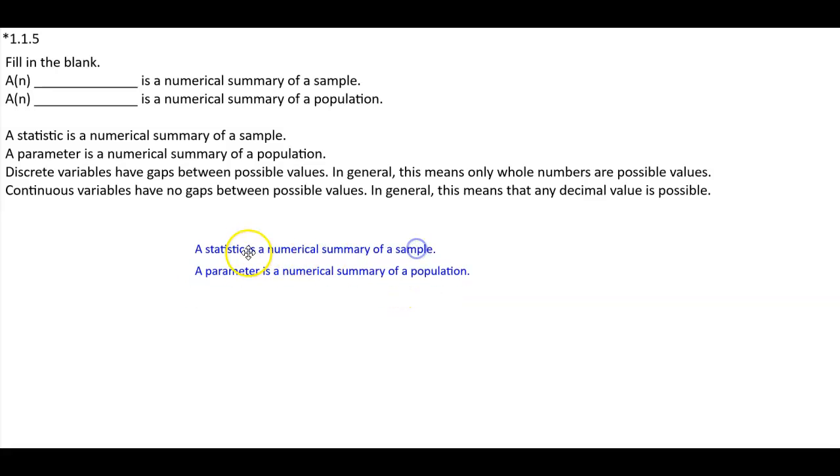These are the answers. So a statistic is a numerical summary of a sample, and a parameter is a numerical summary of a population.